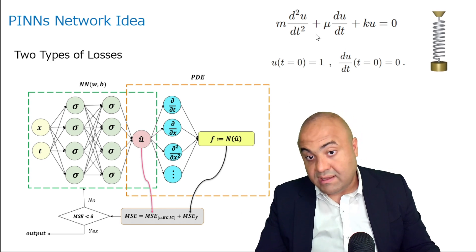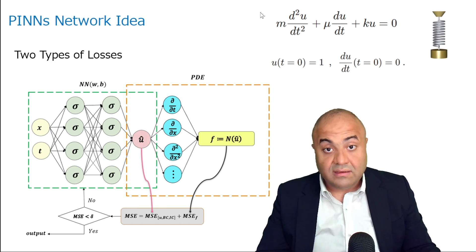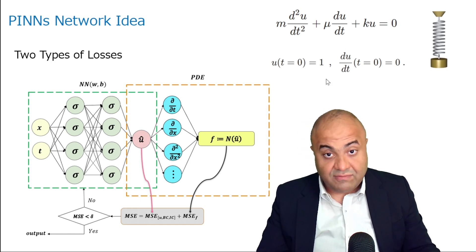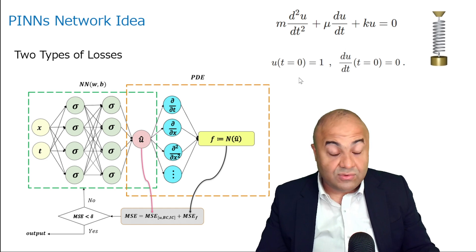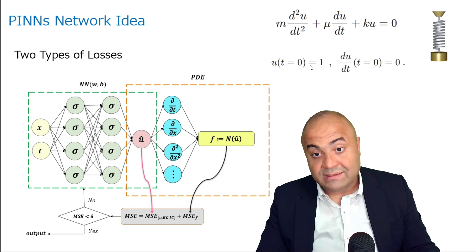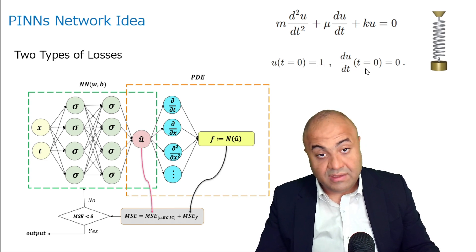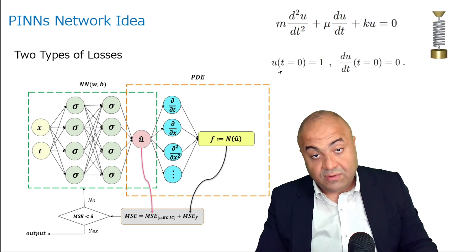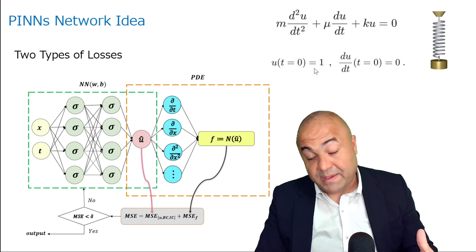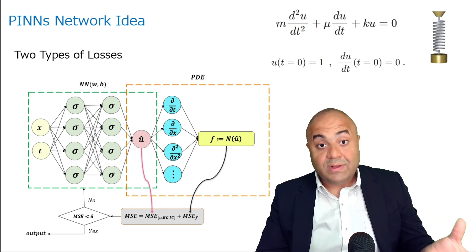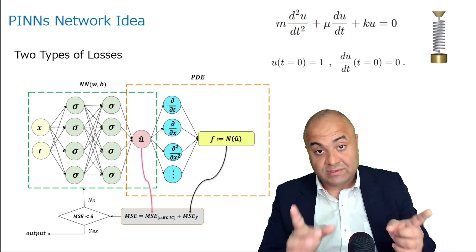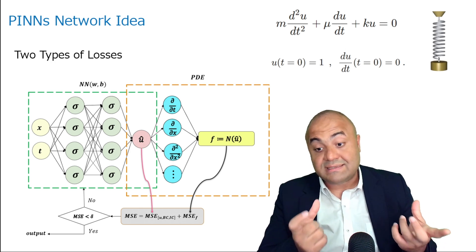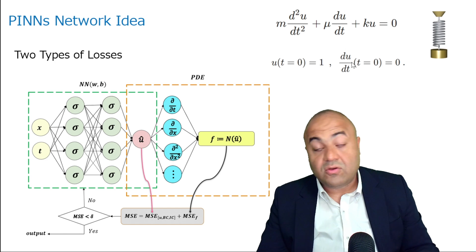In our case, the physics loss is based on the ODE governing equation. For the initial condition, we don't have a boundary condition in this ODE, but we do have an initial condition: u at time equals zero is one, and the speed at time equals zero is zero. The network has to comply with this — if we put time equals zero, we expect u to be one. If it doesn't give us one, we consider it a loss and need to change the weights and biases.